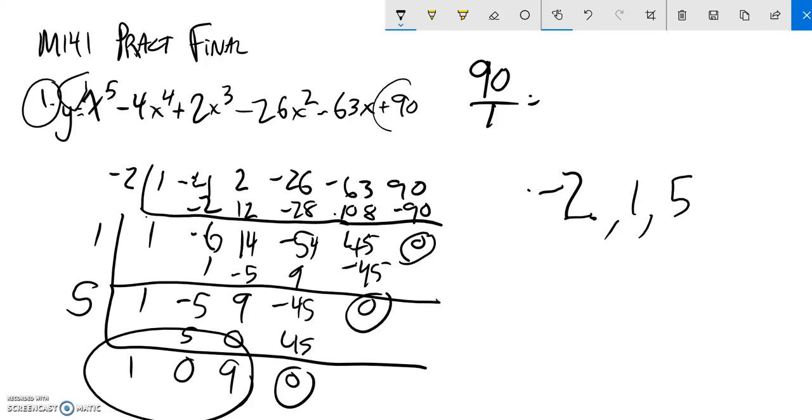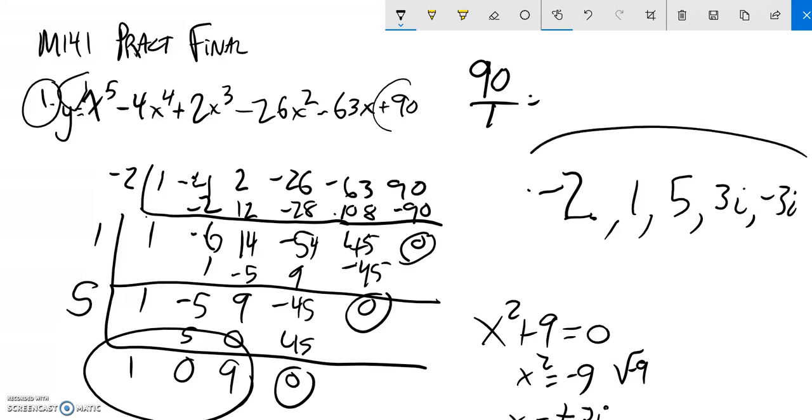Notice what I'm left with is the polynomial x squared plus 9. x squared plus 0x plus 9. Set that equal to 0, subtract 9 from both sides: x squared equals negative 9. Square root both sides, and I get plus or minus 3i. Square root of negative 9. So my other two possible zeros are 3i and negative 3i, and there they all are.